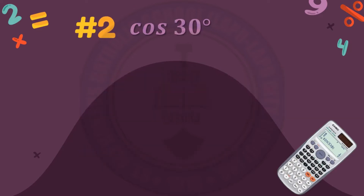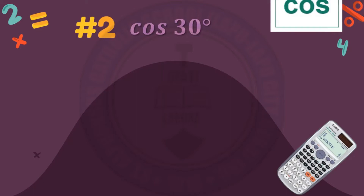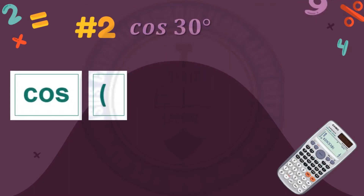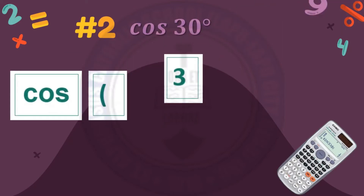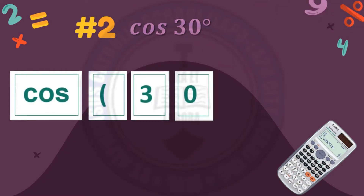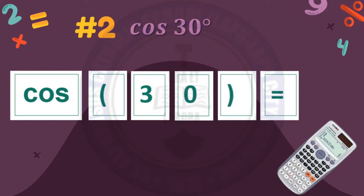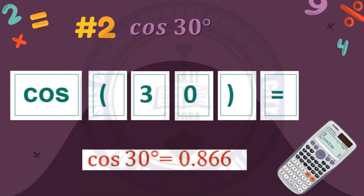Number 2: cosine 30 degrees. Click cos, then click the open parenthesis, followed by 30, then close parenthesis, then equal. With that, cosine 30 degrees is equal to 0.866.